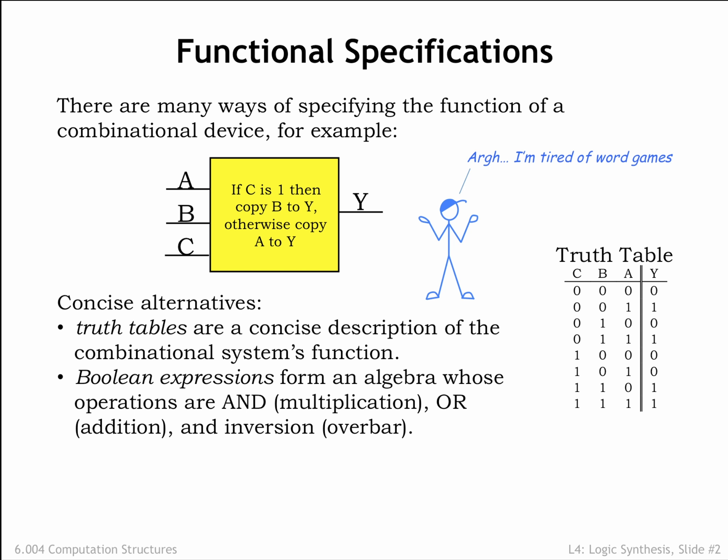Sadly, they aren't really practical when the devices have many inputs. If, for example, we were describing the functionality of a circuit to add 2 32-bit numbers, there would be 64 inputs altogether and the truth table would need 2 to the 64th rows.